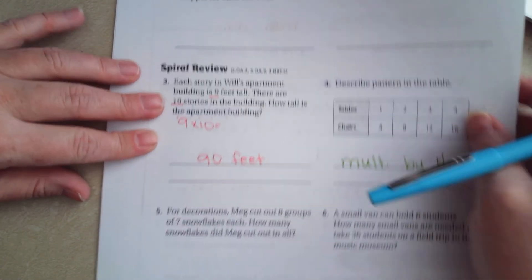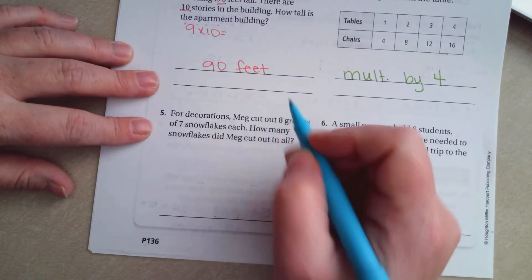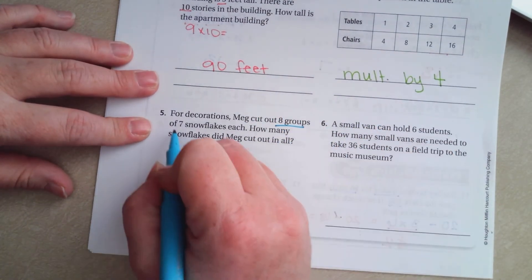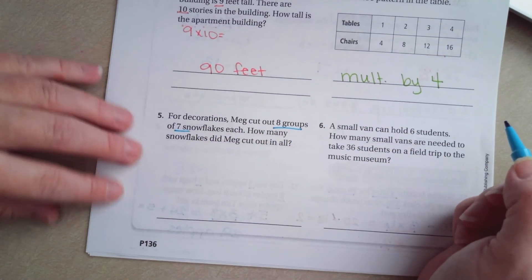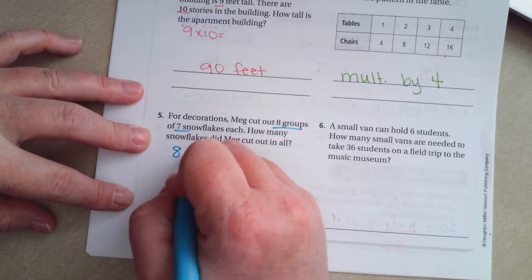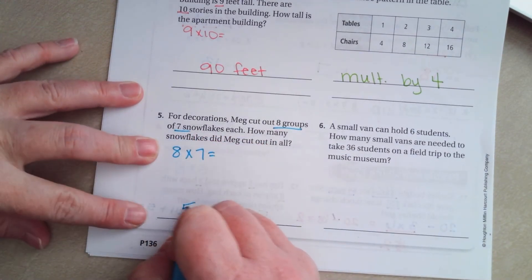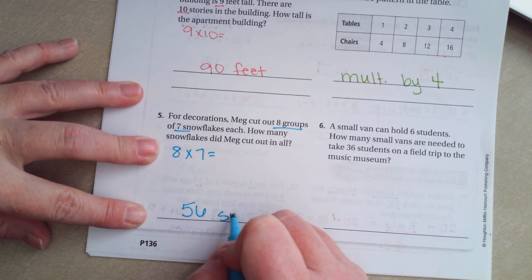We're going to go down and it says for decorations, Meg cut out 8 groups of 7 snowflakes each. How many snowflakes did she cut? Well 8 times 7. 56 snowflakes.